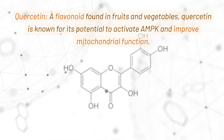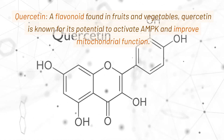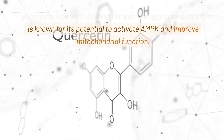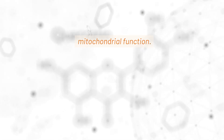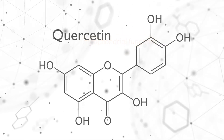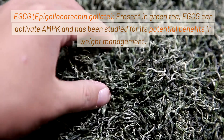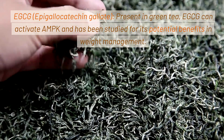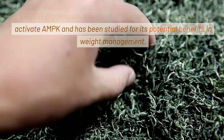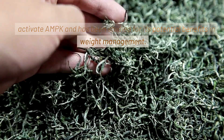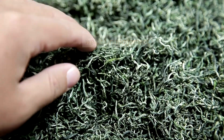Quercetin, a flavonoid found in fruits and vegetables, is known for its potential to activate AMPK and improve mitochondrial function. EGCG, or epigallocatechin gallate, present in green tea, can activate AMPK and has been studied for its potential benefits in weight management.